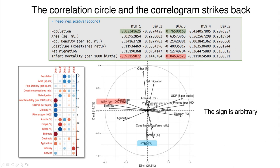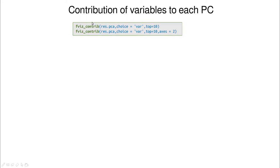So you can see that crops has a large red circle in the second dimension, corresponding to the arrow pointing down and close to the circle there. There are many ways to look at variable contributions. Another very visual approach uses a function that plots the contribution of each variable to the two different principal components. By default it shows the first axis, but you can change that. I'm only showing the top 10 variables.